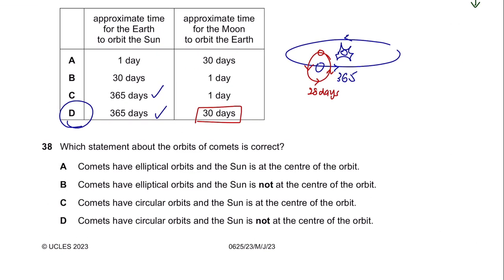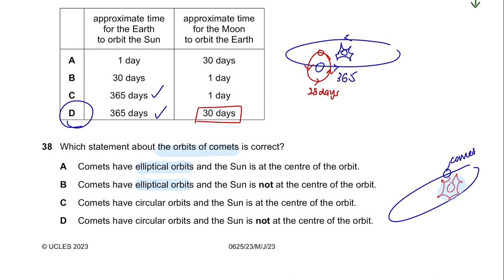Question 38. Which statement about the orbits of comets is correct? This question has also been repeated in all variants. Comets have elliptical orbits and the Sun is not at the center of the orbit. So the answer is B.